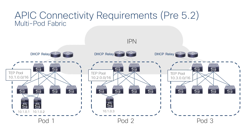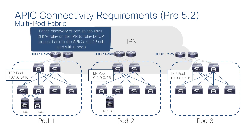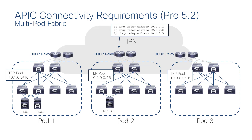Even though APIC 3 is in pod 2, it still uses the IP address 10.1.0.3, which is from the TEP pool of pod 1. Fabric discovery with multipod works by using DHCP relay in the IPN network to relay DHCP packets from the spines and remote pods back to the APICs in the first pod.